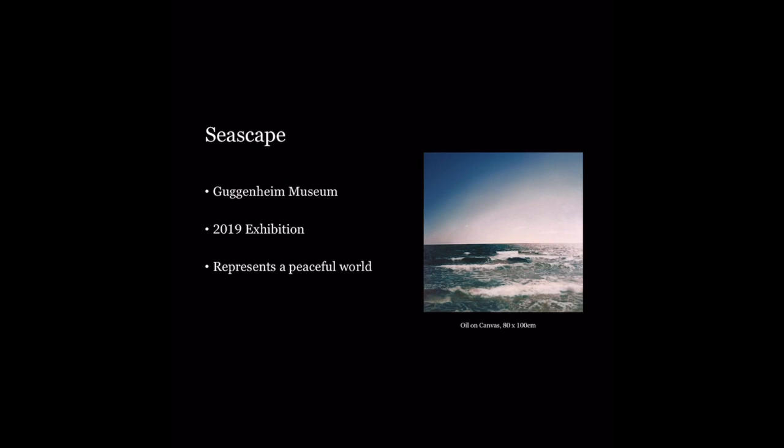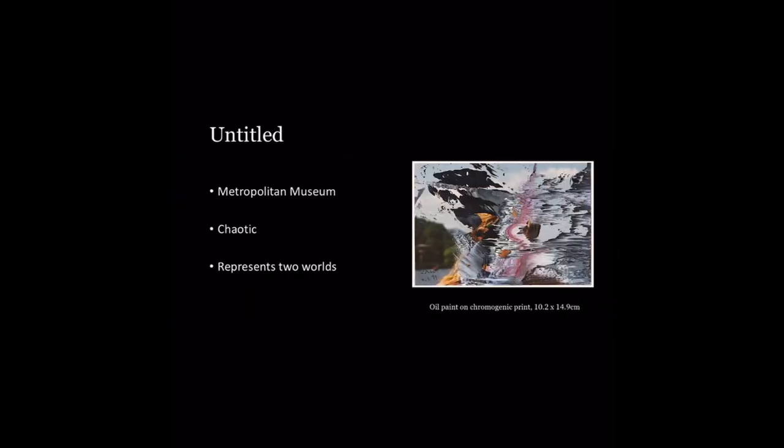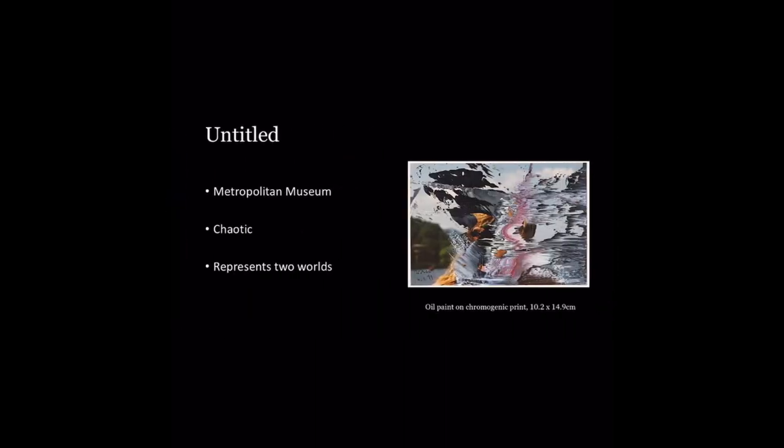The second work, which was untitled, was oil paint on chromogenic print and was on display at the Metropolitan Museum. In this image it's very chaotic and has clashing images and colors, in which Richer tries to represent two worlds — one of his chaotic and violent world back home, and the world that he aspires to achieve.